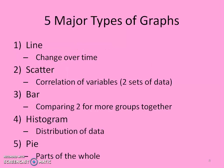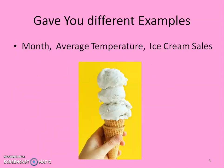He talked about five different types of graphs, and of course he was talking about some examples. One example was ice cream sales according to their month and the average temperature.